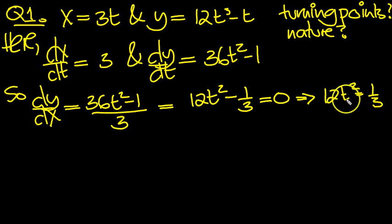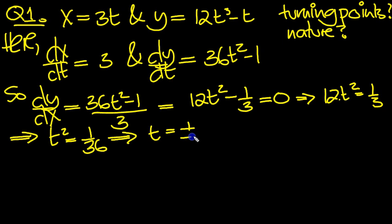You get 12t squared equals 1 third. Divide by 12, we'll move the 12 from times on one side to divide on the other. t squared equals 1 over 36. Square root both sides, t is equal to plus or minus 1 over 6.